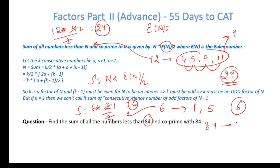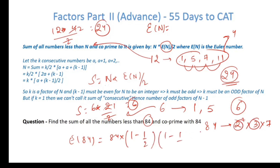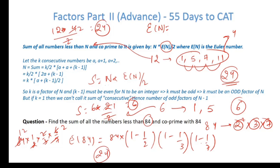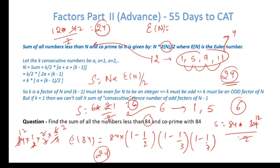Let's take another example: 84 = 2² × 3 × 7. Euler's of 84 = 84 × (1 − 1/2) × (1 − 1/3) × (1 − 1/7) = 84 × 1/2 × 2/3 × 6/7 = 24. So the sum of all numbers less than 84 and co-prime to it = 84 × 24 / 2 = 84 × 12 = 1008.